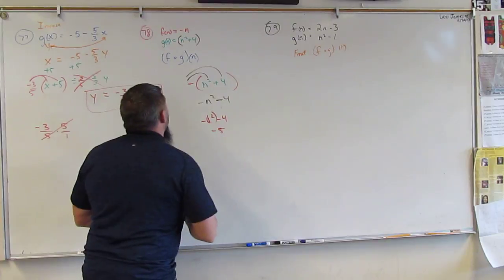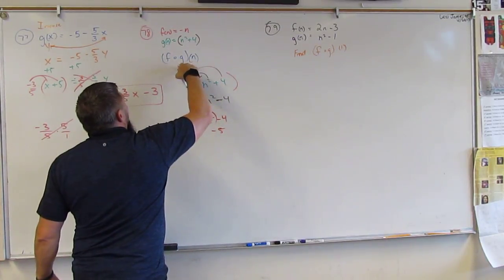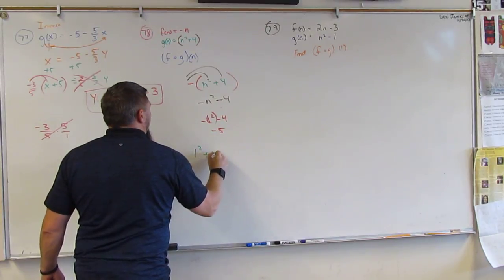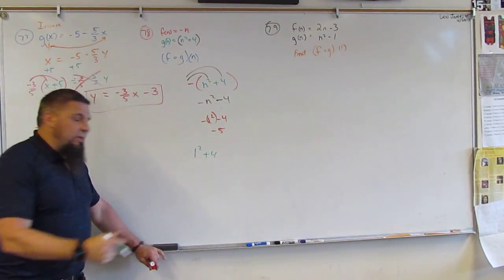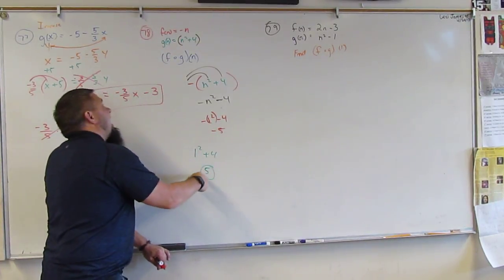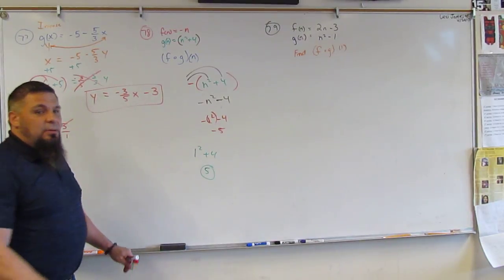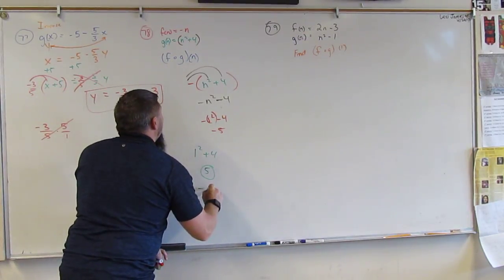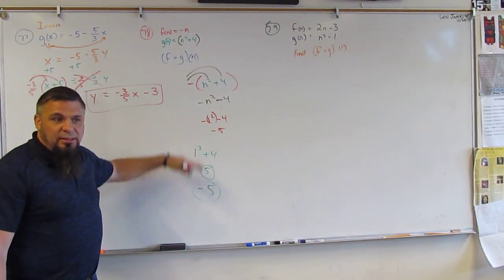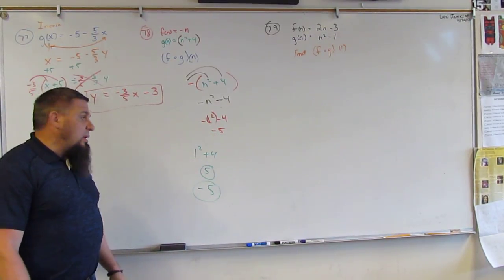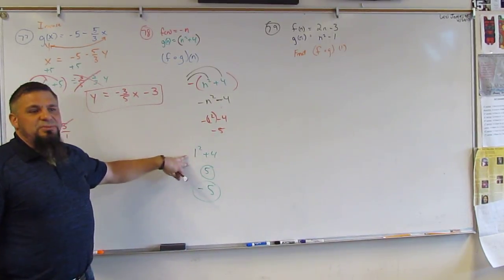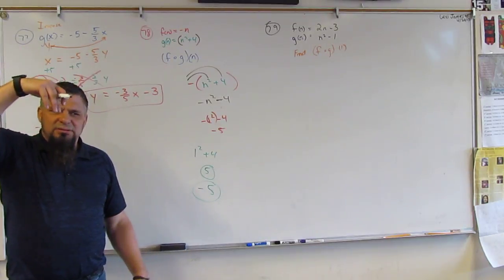But there's an easier way to do this. I could just plug in 1 in the G. So, it's 1 squared plus 4. What is 1 squared? 1. What's 1 plus 4? 5. And then I take 5 and I plug it into F. So, that would be negative 5, right? And so, that's the same thing, right? And so, to me, it's easier to do it this way than it is to do it this way. Plugging in the function. Does that make sense?